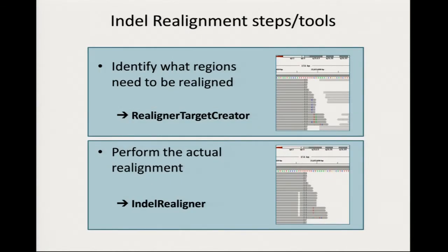These are the two principles, and the protocol follows them in two steps — two passes through the data using two tools. The first is called the Realign Target Creator, which goes through the data and identifies regions that may contain problematic indels. The second actually performs the realignment, applying the algorithm just described.